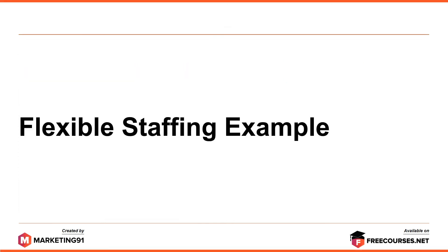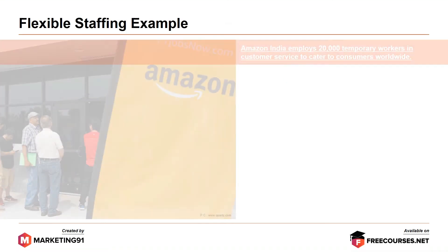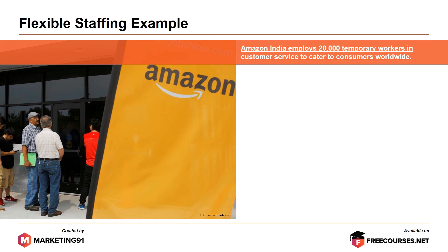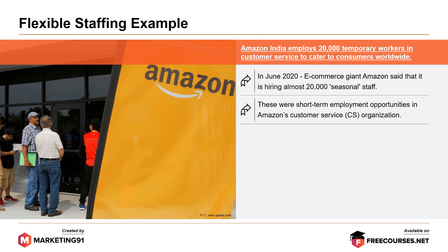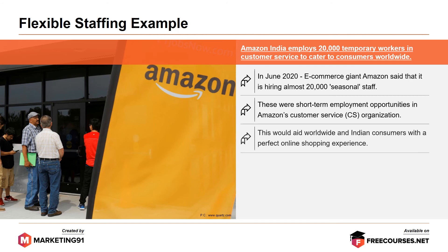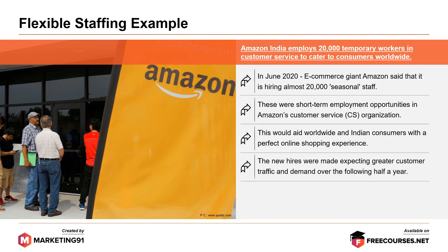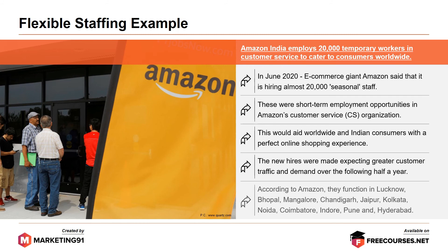Let's look at a flexible staffing example — the firm Amazon. Amazon India employs 20,000 temporary workers in customer service to cater to consumers worldwide. In June 2020, during the pandemic, e-commerce giant Amazon announced it was hiring almost 20,000 seasonal staff for short-term employment opportunities in its customer service organization. This would aid worldwide and Indian consumers with a better online shopping experience. The new hires were made in anticipation of greater customer traffic and demand over the following six months. According to Amazon, they functioned across cities including Lucknow, Mangalore, Chandigarh, Jaipur, Kolkata, Noida, Coimbatore, Indore, Pune, and Hyderabad.